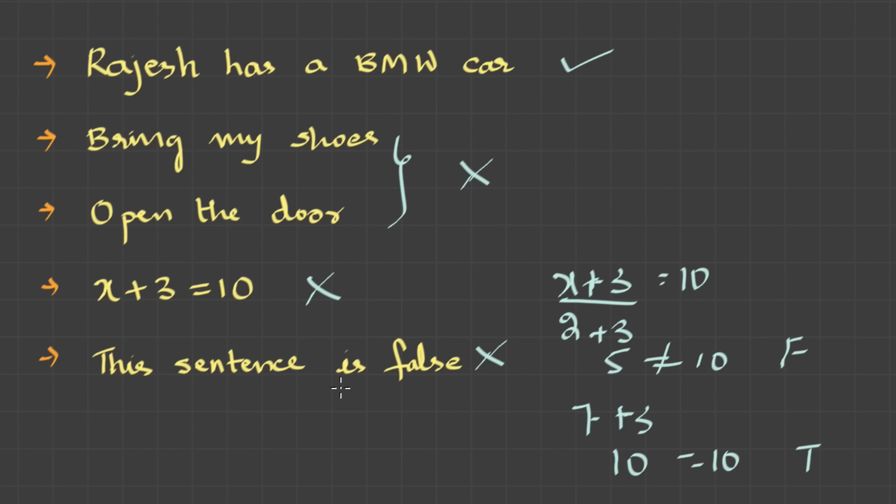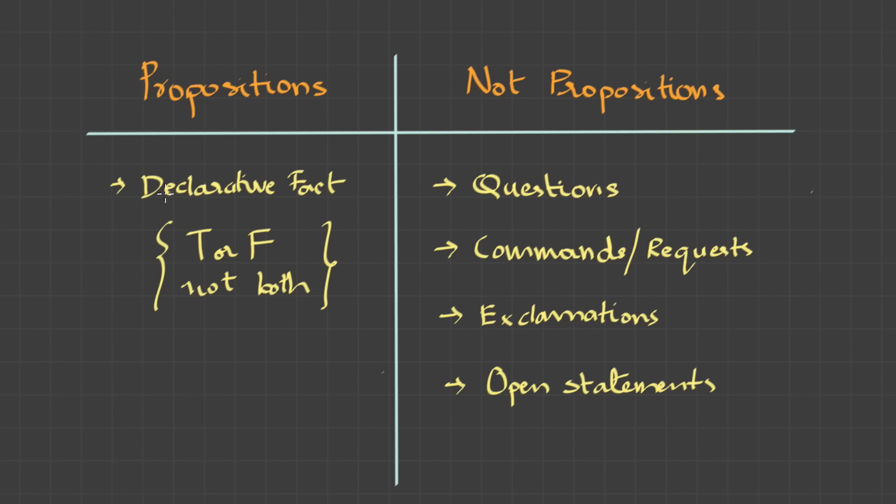Okay. Let's tabulate the classifications. Propositions are declarative facts that are either TRUE or FALSE but not BOTH. And which are not propositions are questions, commands and requests, exclamations like yuppie, hooray, sorry and more. And finally, open statements, the statements which include the variables like x, y, z and all. So, that's all about propositions.